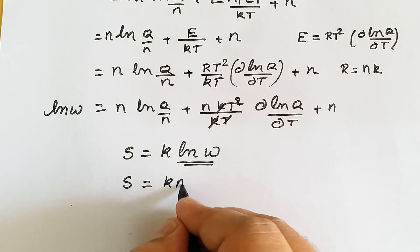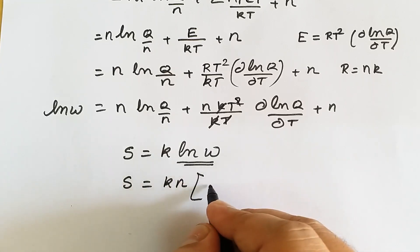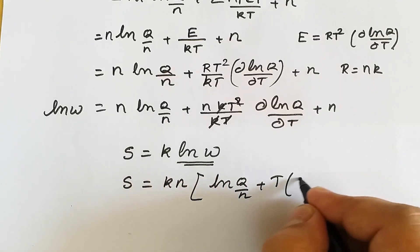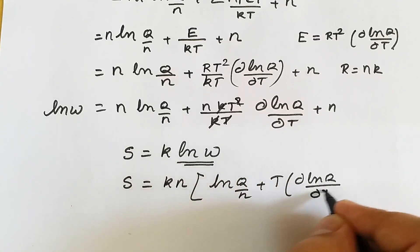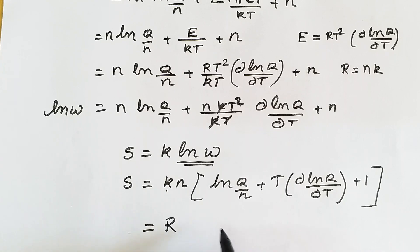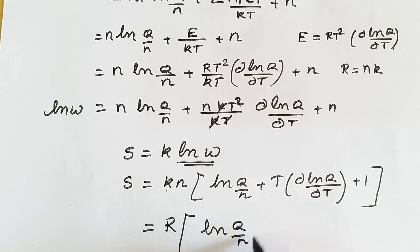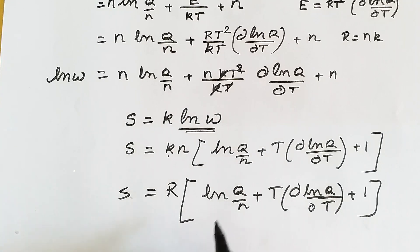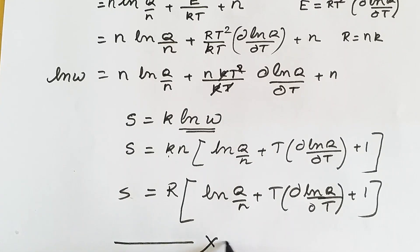Substituting ln(W) into S equals k·ln(W) and factoring out N, we have S equals k·N times [ln(Q/N) plus T·d(ln Q)/dT plus 1]. Since k·N equals R, the gas constant, the final relation for entropy in terms of partition function is: S equals R times [ln(Q/N) plus T·d(ln Q)/dT plus 1]. This is the final relation for entropy in terms of partition function Q.